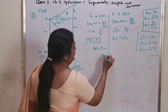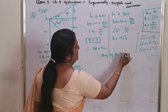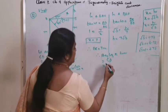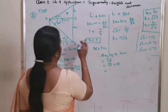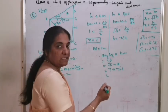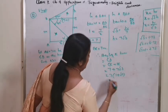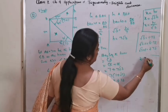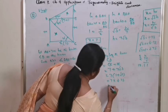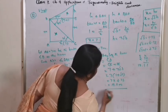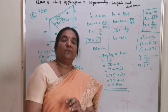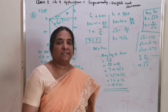Therefore the height of the tower equals CE plus DE. CE is 7 and DE is 7 root 3. Taking common factor 7: height equals 7 into (1 plus root 3), which equals 7 into 2.73, that is 19.11 meters. Therefore the height of the tower is 19.11 meters. The remaining questions and worked-out examples will be done in the next class.